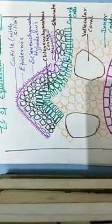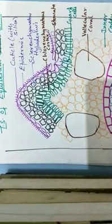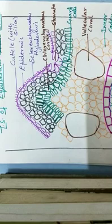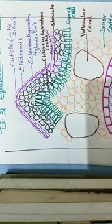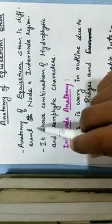Hello students, today we are going to study about the anatomy of Equisetum stem, which is a pteridophyte. This is the structure of the stem section, so first of all we do its theory part in the anatomy.